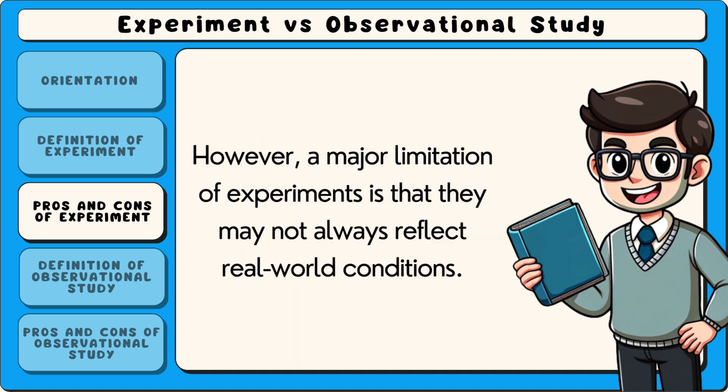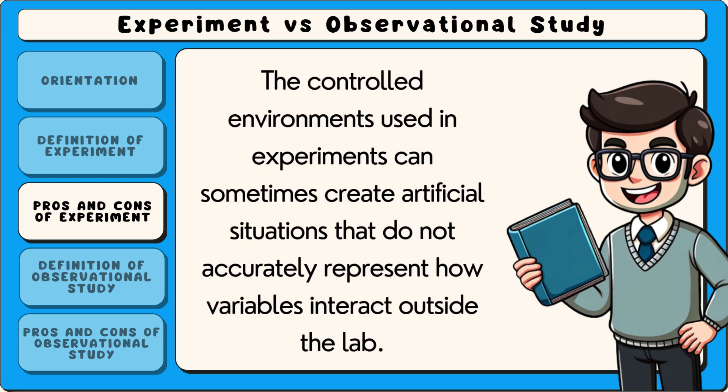However, a major limitation of experiments is that they may not always reflect real-world conditions. The controlled environments used in experiments can sometimes create artificial situations that do not accurately represent how variables interact outside the lab.